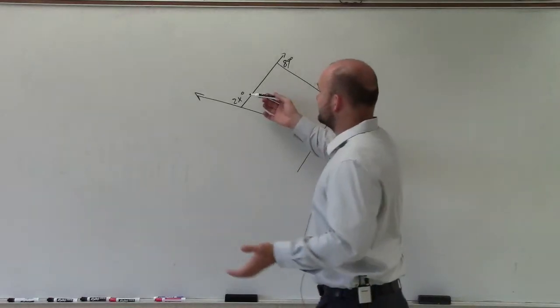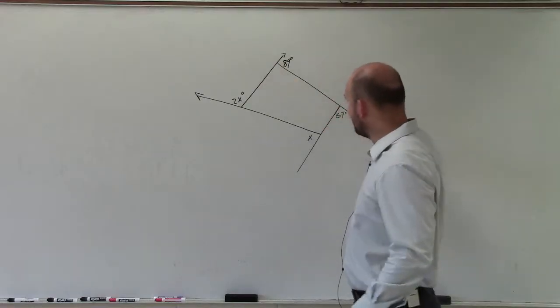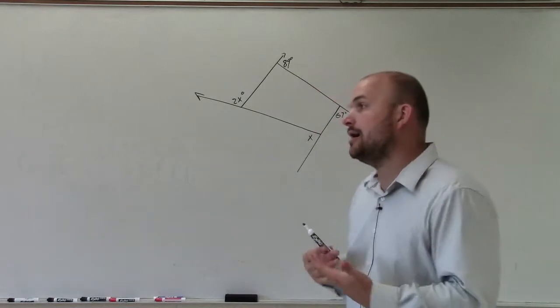So if I want to solve for x, I just need to write an equation. Well remember, I said the sum of all of your exterior angles always adds up to 360 for any one of your polygons.